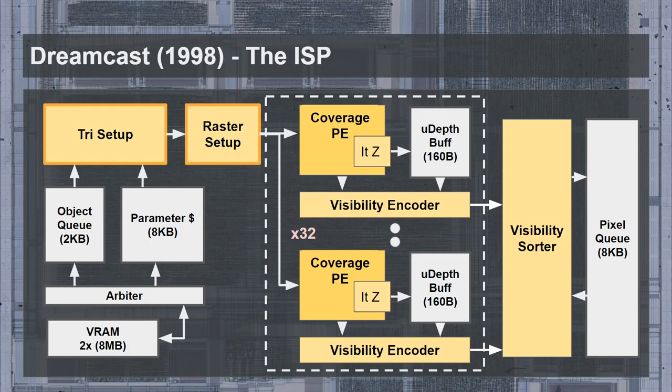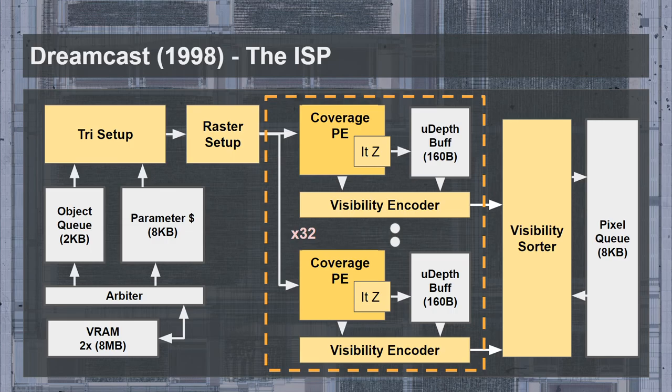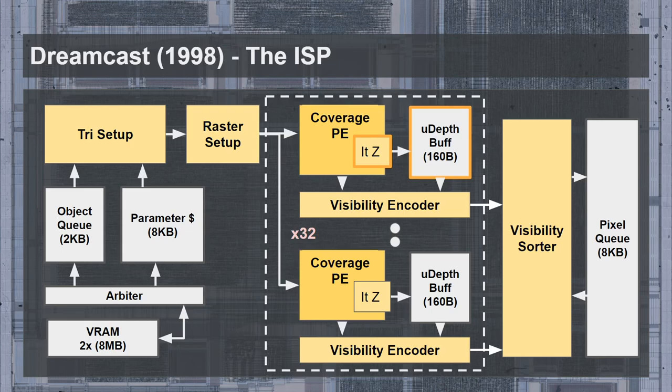The coverage processing engine array iterated a triangle over 32 cycles. Other PowerVR GPUs only contained one or two of these elements, but the Dreamcast GPU contained 32 of them — meaning 32 pixels would be evaluated in parallel, requiring 32 cycles per triangle for the entire tile. This was the brute-force approach to coverage for performance, and is how the Dreamcast achieved an effective pixel fill rate of 3.2 gigapixels per second. Each coverage processing element contained a depth iterator and a micro depth buffer. For 32-bit depth values with an 8-bit triangle tag, that would be 160 bytes each, which appears consistent with the die photos.